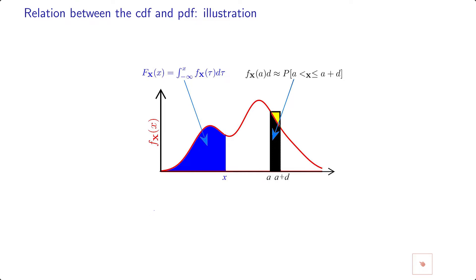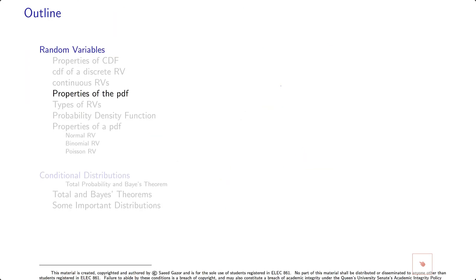Obviously, if you have the PDF, the area from minus infinity to any given point x is the CDF, and the area from a to a plus d can be approximated using that because you have the area property.